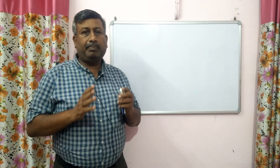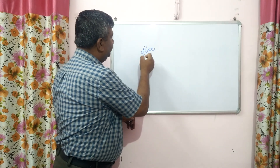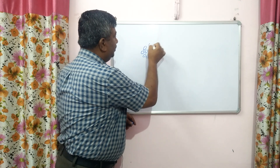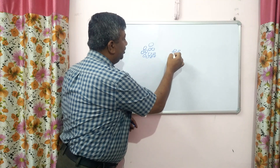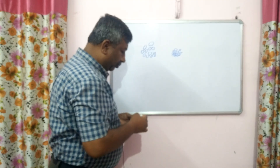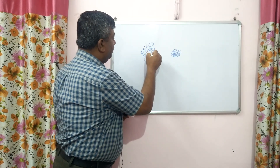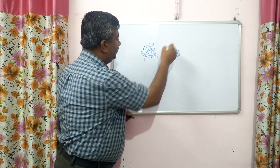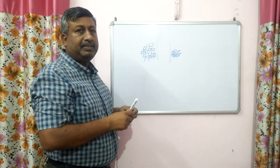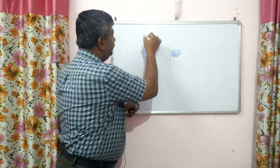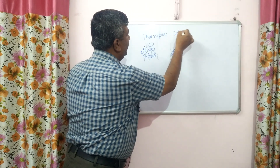First of all, let us understand what macropores and micropores are. Soil particles are in aggregates — large aggregates and small aggregates. Because of this aggregation, there is space between the aggregates. If this space between the aggregates is large, then it is known as a macropore. Macropore size is in general more than 100 microns.